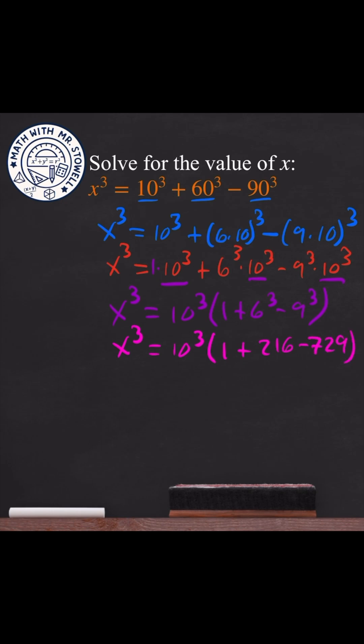Adding those together, we get x³ = 10³ × (-512).